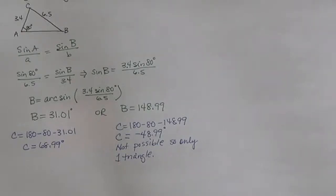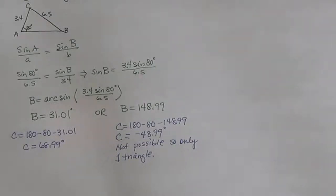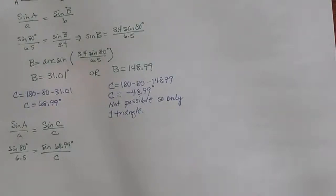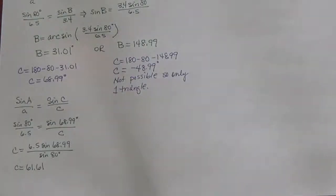Now we just need to find the missing side length c. Using the law of sines with the ratio between A and C — preferring the originally given values for accuracy — sine of 80 degrees over 6.5 equals sine of 68.99 degrees over c. Solving for c, we get c approximately equal to 6.11. And there we have our solved triangle.